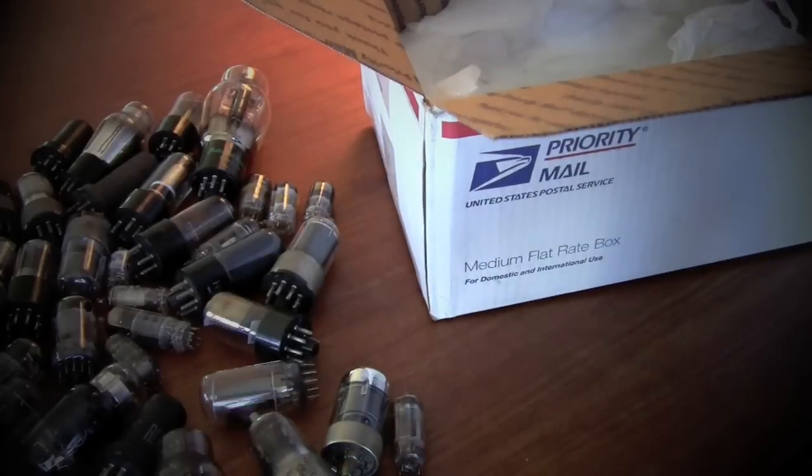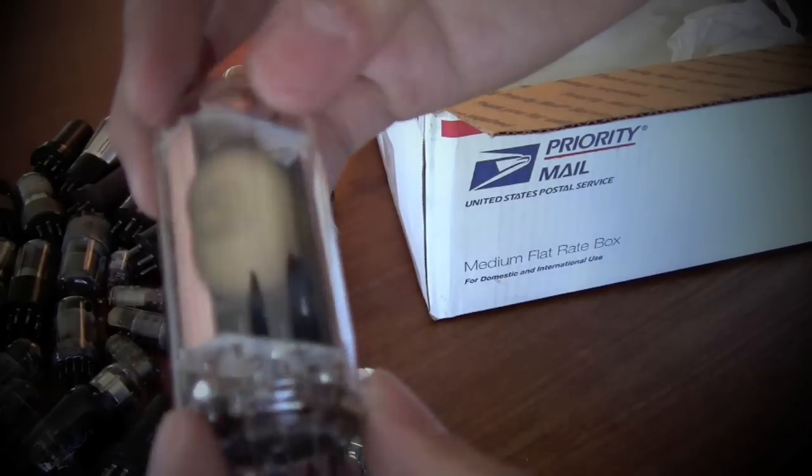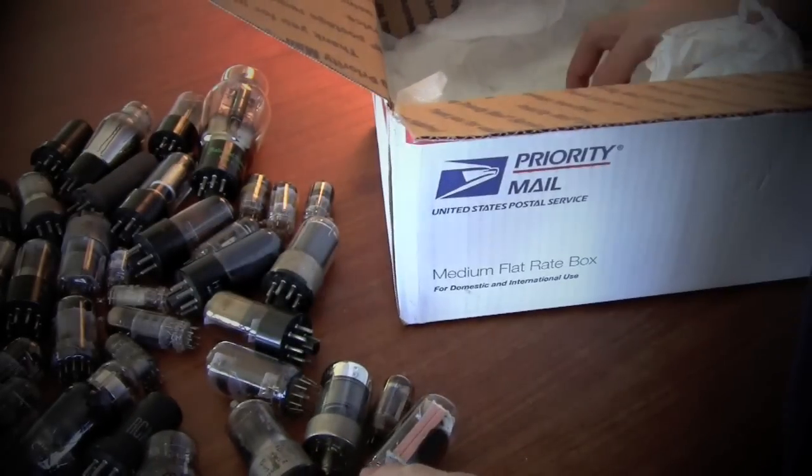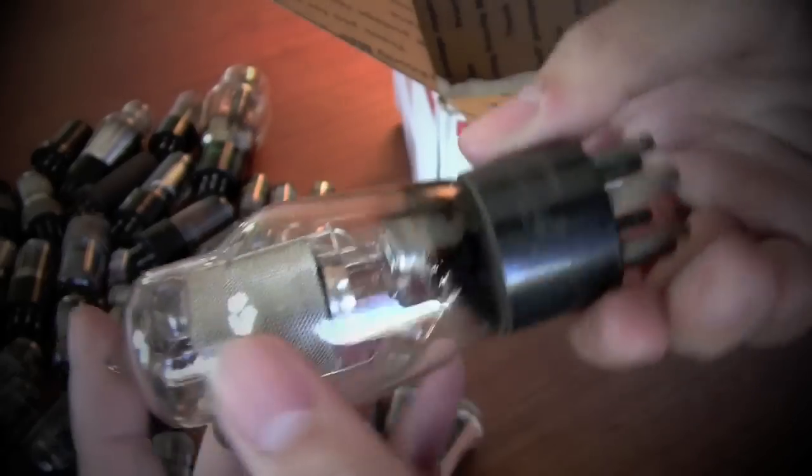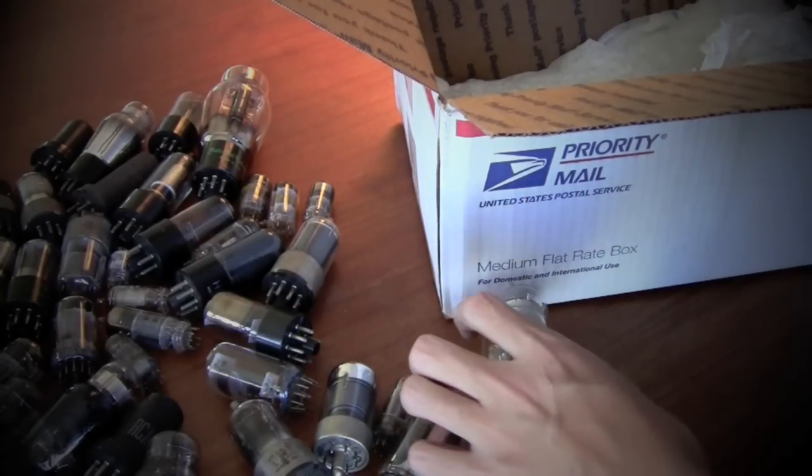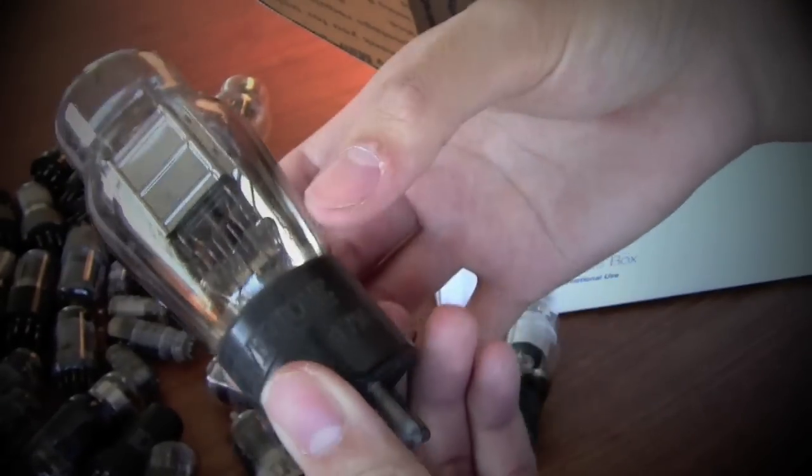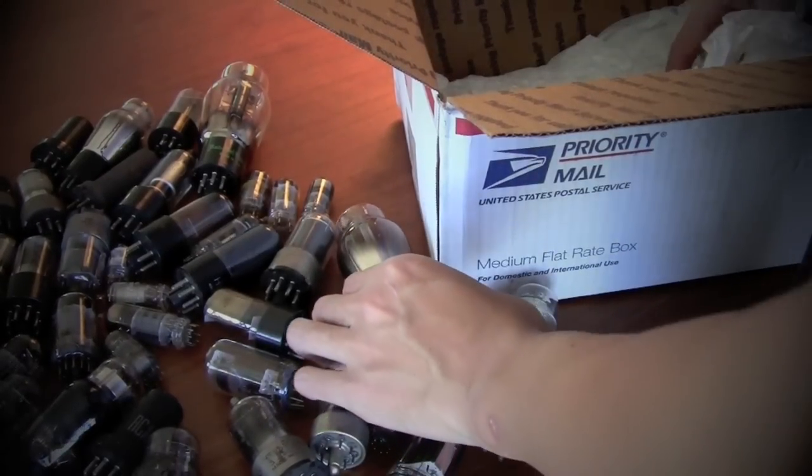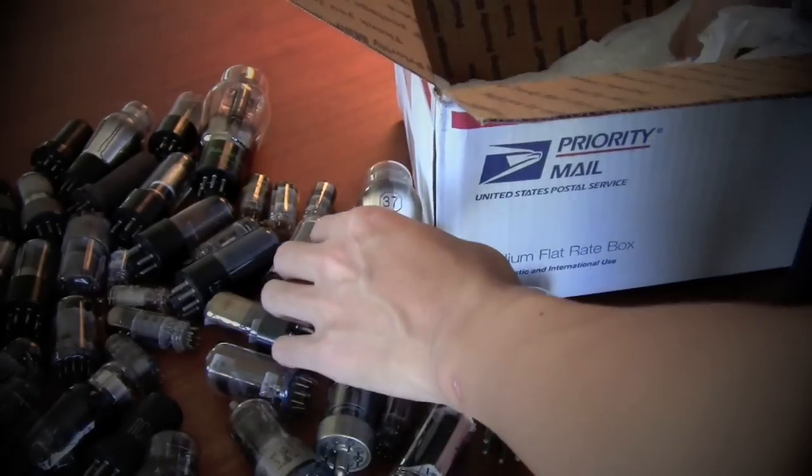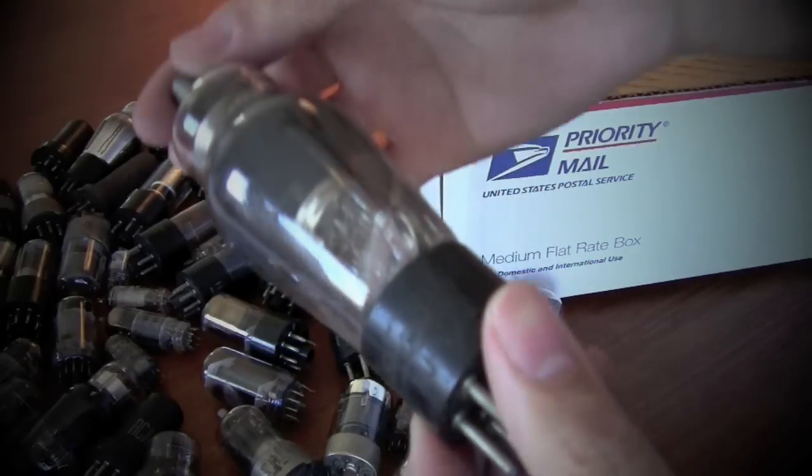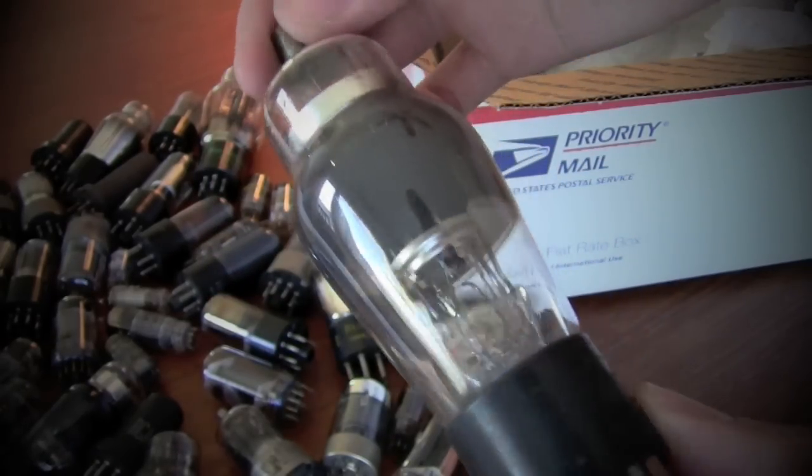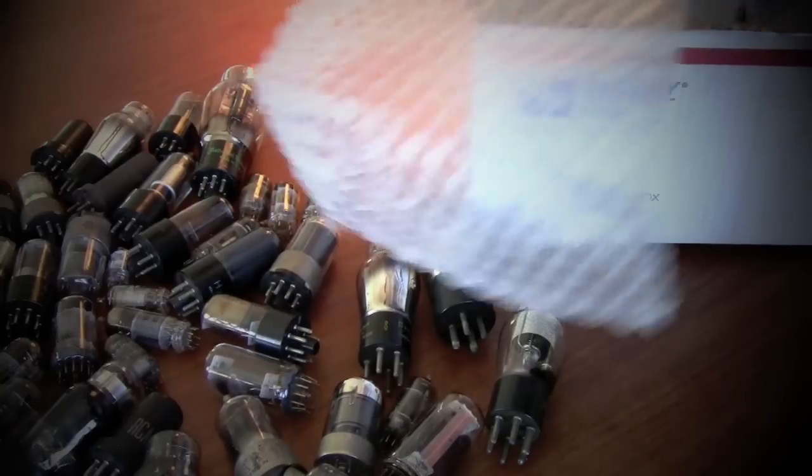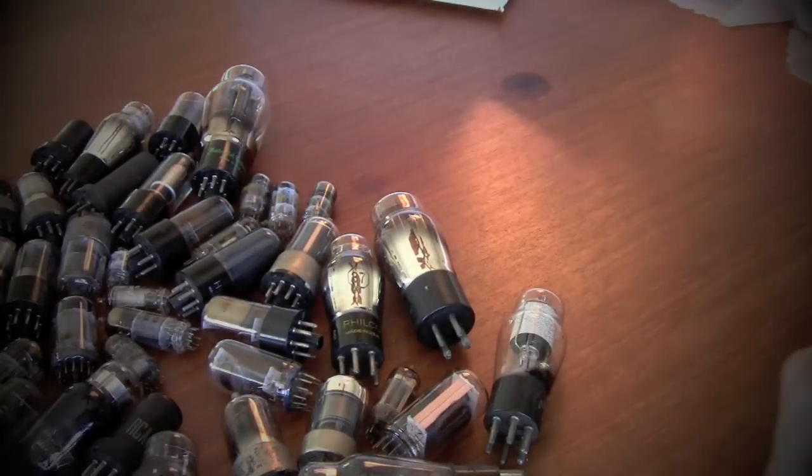And another little guy. And this one. Got another Philco. Silvertone. Philco. A National something. That looks like it's got a little coin cell in it. And I believe that's all of them. That's quite a few vacuum tubes.